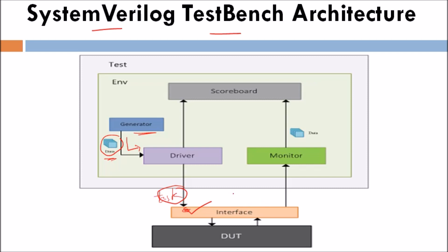Next is about the interface. If the design contains hundreds of port signals, it would be complicated to connect all those signals and difficult to maintain and reuse them. So instead, we can place all the design input and output ports into a container which becomes an interface to the DUT. This interface is nothing but a container which has all the input and output ports, and the design can then be driven with values through this interface.